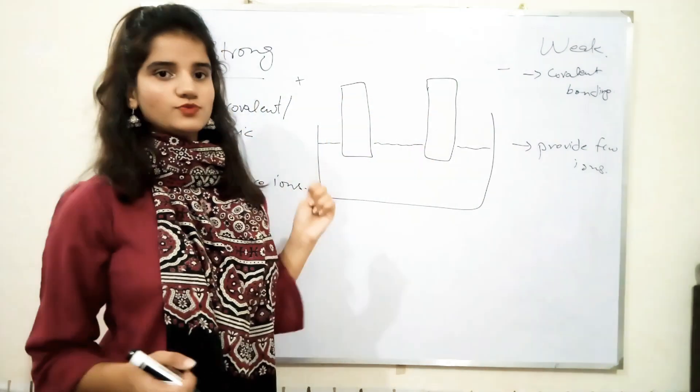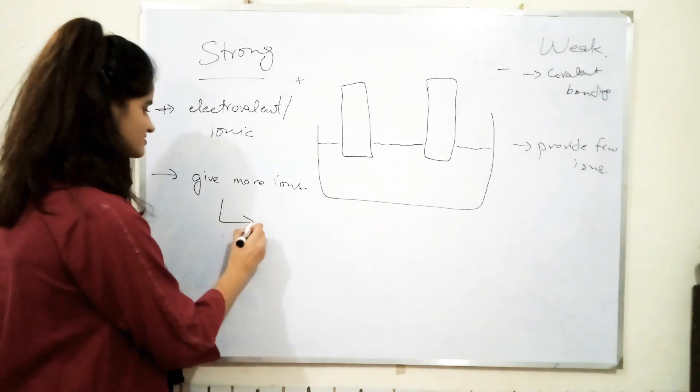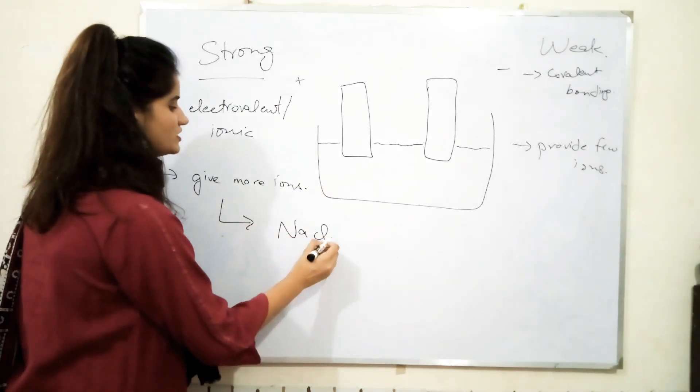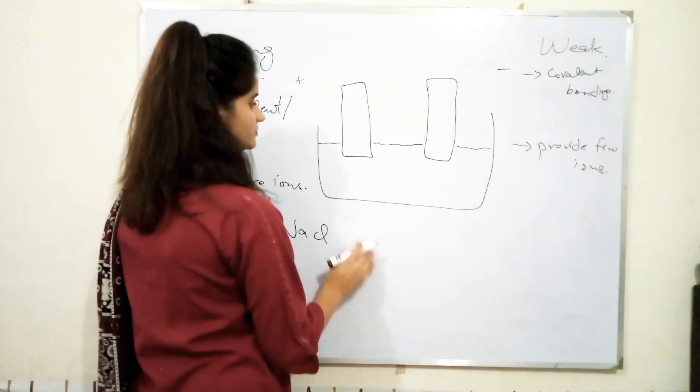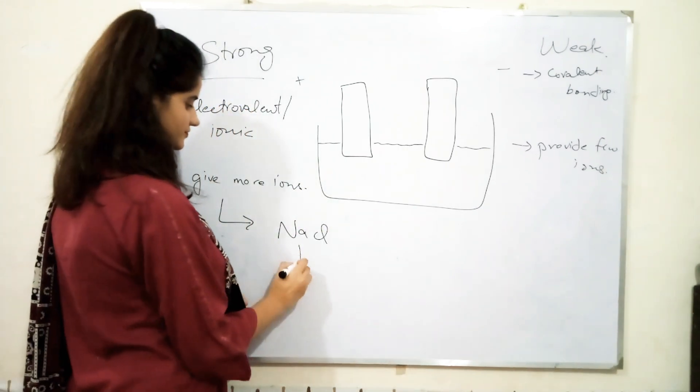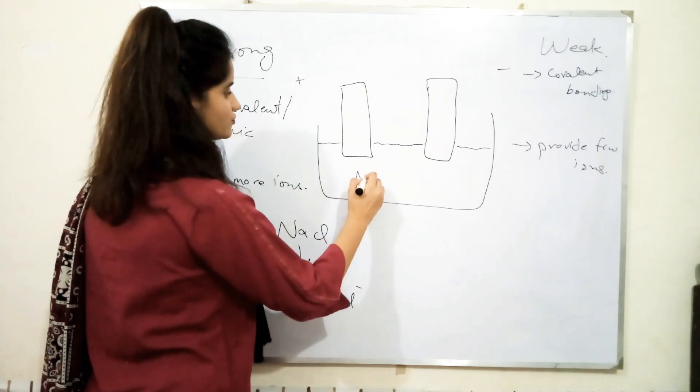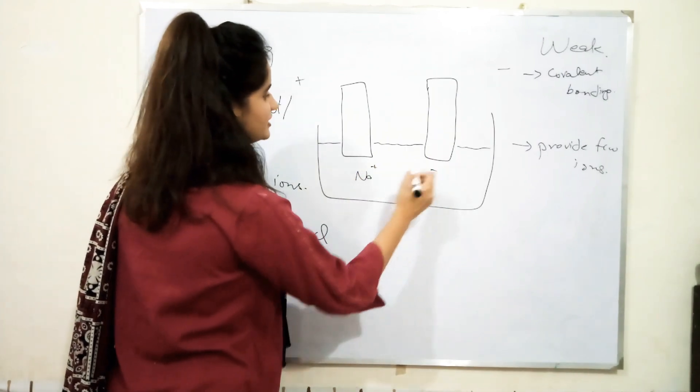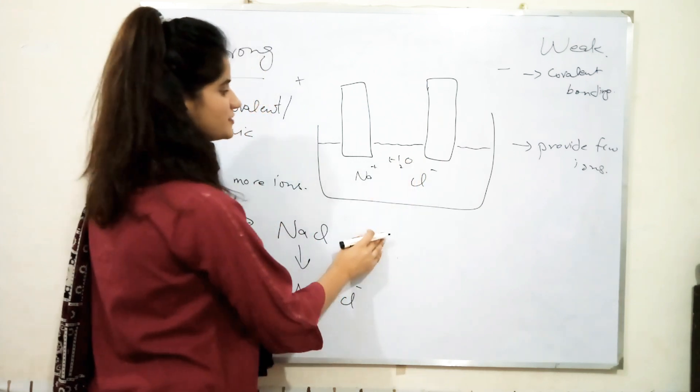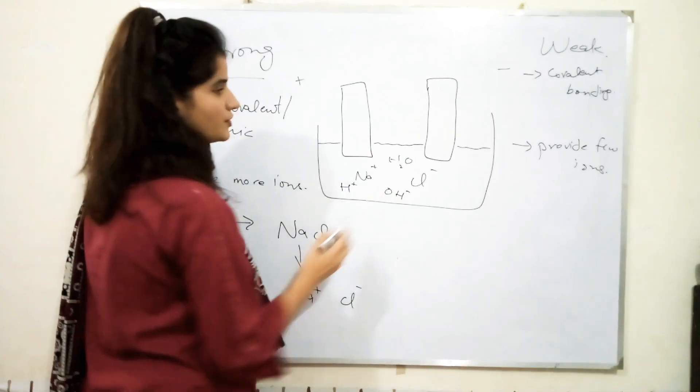And we can name strong electrolyte and weak electrolyte. Now, the example for strong electrolyte is sodium chloride which is known as NaCl. Sodium chloride, when added into water, it will dissociate into sodium positive and chlorine negative. And H2O will be present inside which will dissociate into H positive and OH negative.